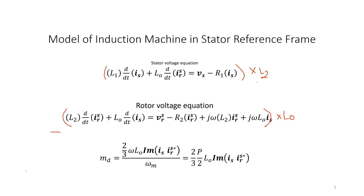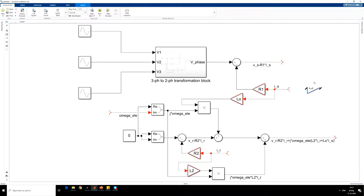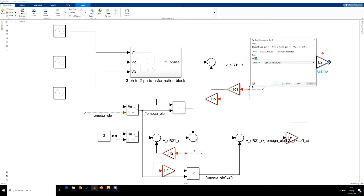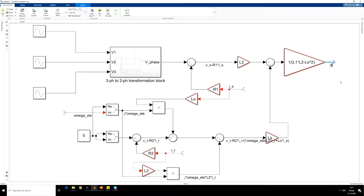We will get L1·L2·Is minus L0²·Is, and then whatever is the resultant we divide by L1·L2 minus L0². Then we will get d/dt of Is. Let us see how to do that in MATLAB. Multiply this signal with L2, multiply this signal with L1·L2, subtract them, then multiply by 1 divided by (L1·L2 minus L0²). This signal is nothing but the derivative of Is.